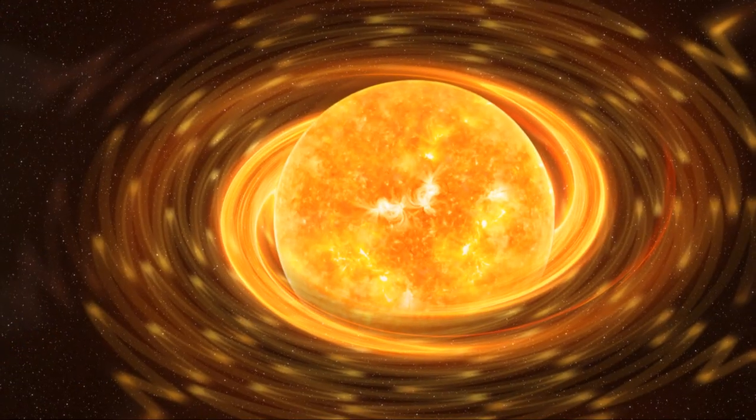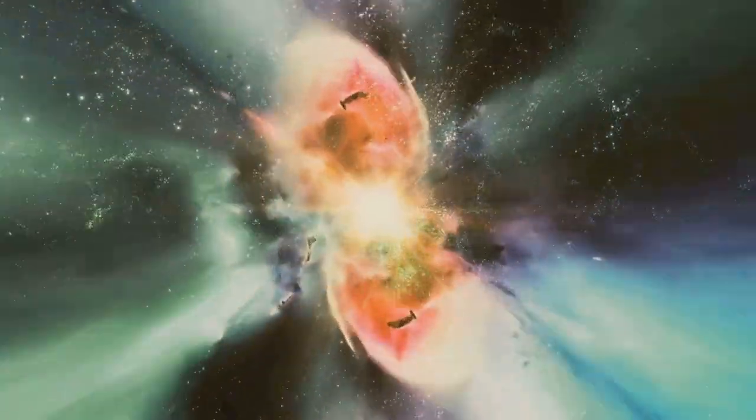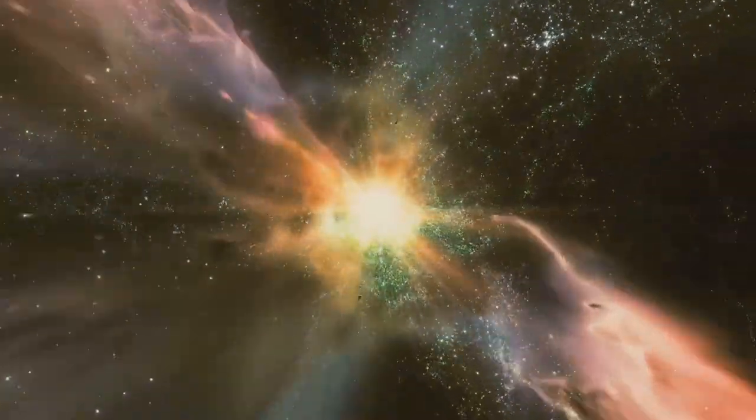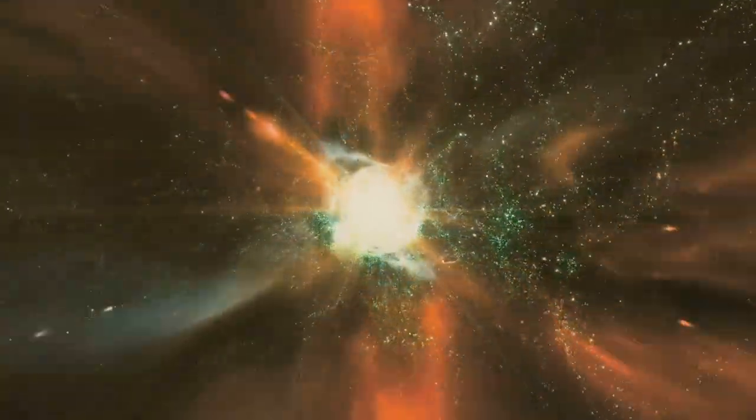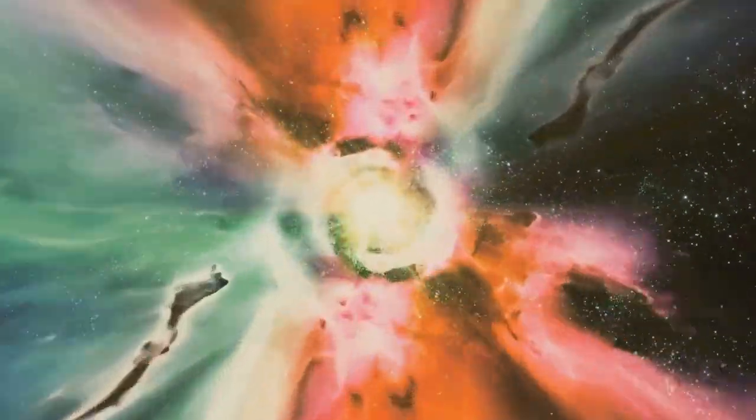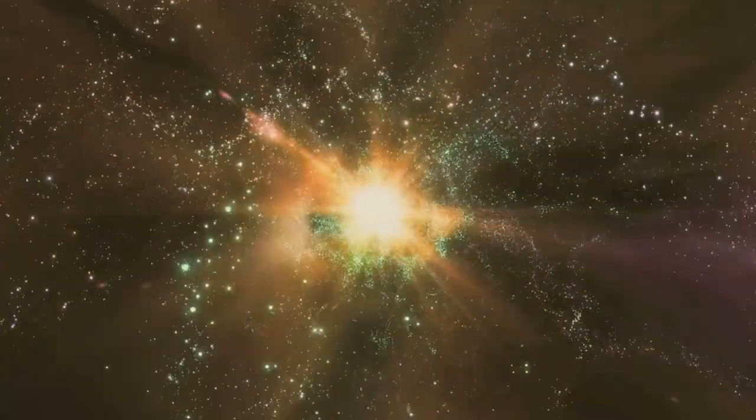But magnetars don't just emit x-rays—they also release powerful bursts of gamma rays, the most energetic form of light. These gamma ray bursts, some of the brightest events in the universe, can be detected across vast cosmic distances, providing insights into the early universe and the processes that shape the cosmos as we know it.